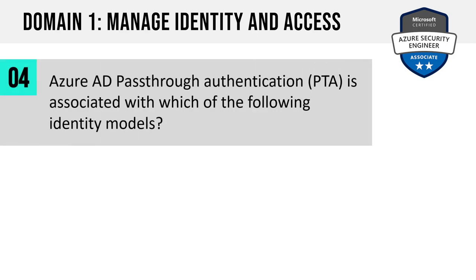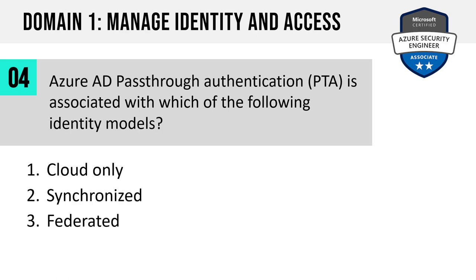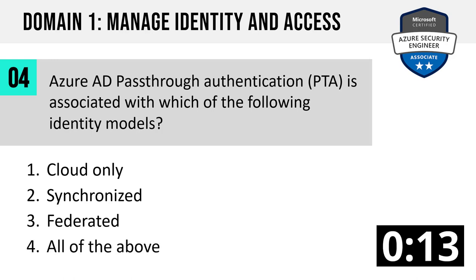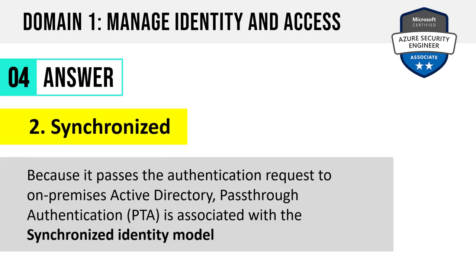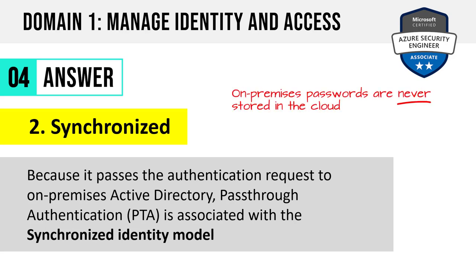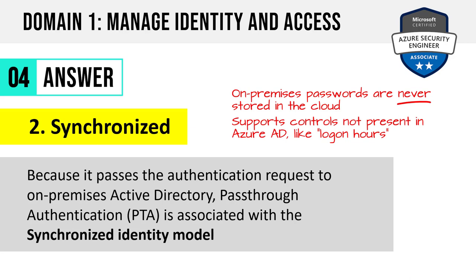Question 4. Azure AD pass-through authentication is associated with which of the following identity models? Cloud only, synchronized, federated, or all of the above? Incidentally, that synchronized model is the most widely deployed today. The answer is synchronized. Because it passes the authentication request through to the on-premises Active Directory, pass-through authentication is associated only with that synchronized identity model. The on-premises passwords are never stored in the cloud. Folks use pass-through authentication sometimes for regulatory concerns, to ensure they only authenticate on-prem, or to take advantage of Active Directory controls not present in Azure AD, like logon hours.